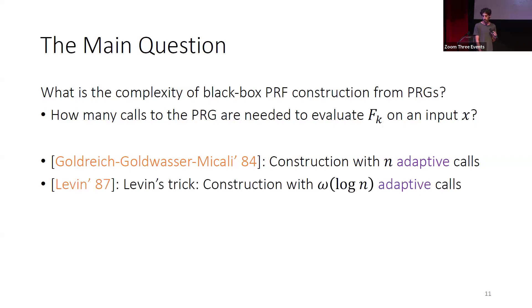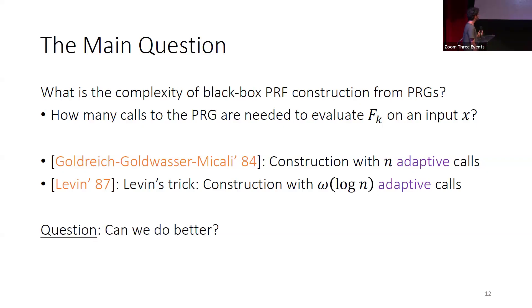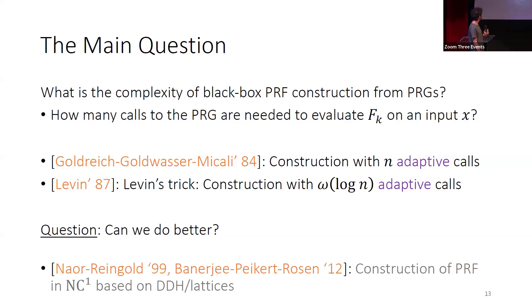The question of this work is: can we do better? Is it necessary to make a super-logarithmic number of adaptive calls, or can we do fewer calls to the PRG? In the last 40 years, since the work of Goldwasser and Micali, there has been no improvement on this question. There are constructions for specific assumptions like DDH, but we care about generic, black-box constructions from PRGs.